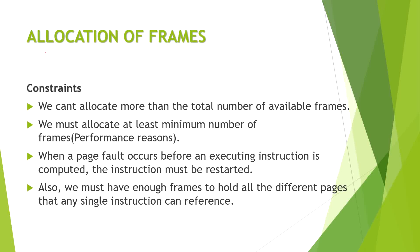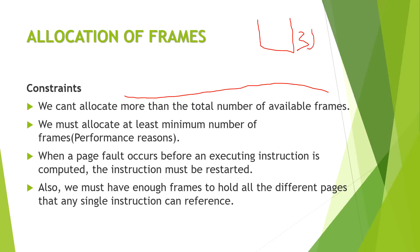Allocation of frames is related to some constraints. The first and most obvious constraint is that we cannot allocate more than the total number of available frames. For example, if a vessel has a capacity of 3 liters, we cannot fill water greater than 3 liters — up to 3 liters we can fill, but not more.